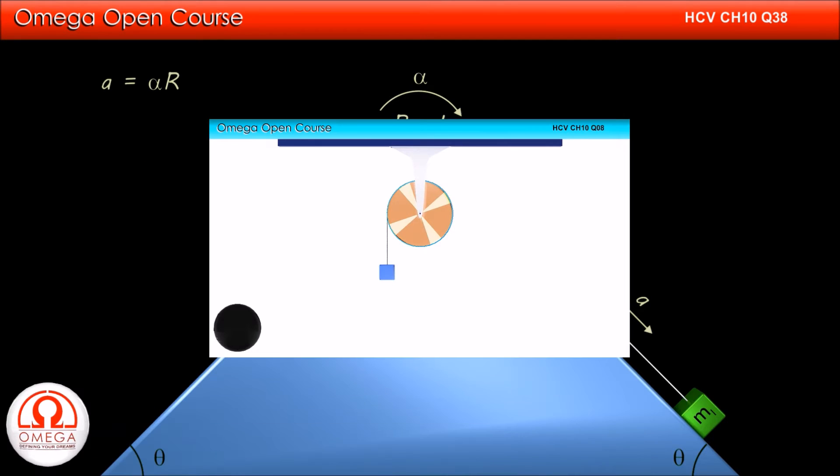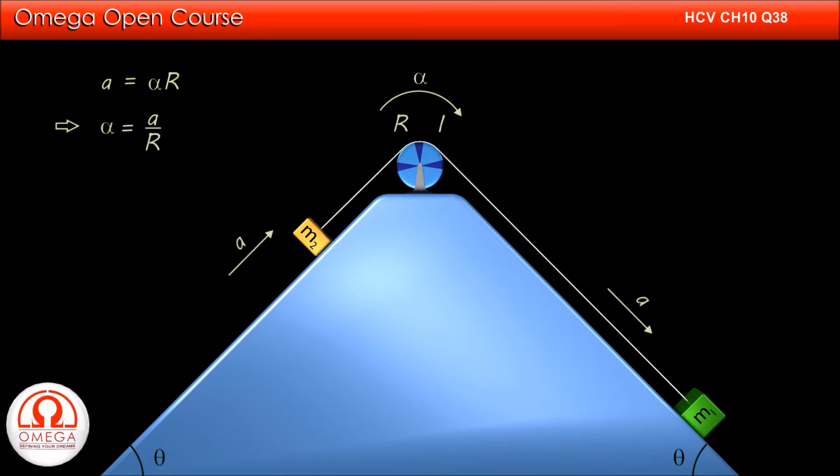If you do not know the relation between angular acceleration and linear acceleration, you may watch our video explaining this relation. The link for the video is shown on the screen and given in the description below. From this relation, we get alpha is equal to A by R.